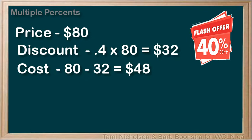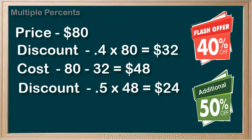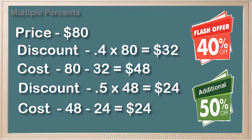You do not buy the item, but when you return to the store several days later, you see that there is an additional 50% off. The discount will be on the sale price of $48. Calculate the discount: .5 times 48 equals $24. The price of the item now is 48 minus 24, or $24. Notice that in this example, the second discount is not calculated on the original price — it is calculated on the reduced price.